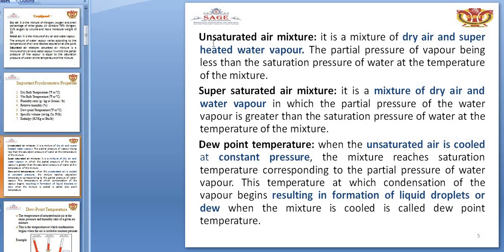You should know about unsaturated and supersaturated air mixtures. An unsaturated air mixture is a mixture of dry air and superheated water vapor in which the partial pressure of vapor is less than the saturation pressure of water at the temperature of the mixture. In both cases it is a mixture of dry air and water vapor, but in the unsaturated case the partial pressure of vapor is less than the saturation pressure.